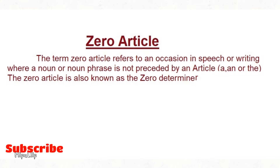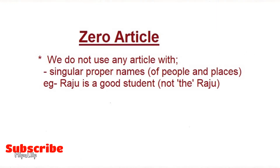When we write or speak a sentence, there will be a noun or noun phrase in that sentence. This noun or noun phrase will typically be preceded by an article — 'a', 'an', or 'the'. But in some cases there won't be any article at all. There won't be 'a', 'an', or 'the'. This is called zero article.